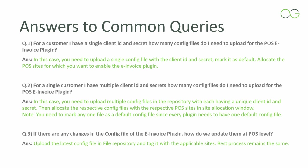Query 2: For a single customer, I have multiple client IDs and secrets — how many config files do I need to upload for the e-invoice plugin? In this case, you need to upload multiple config files in the repository, each having a unique client ID and secret. Then allocate the respective config files to the respective POS sites in the Site Allocation window. Please note, you need to mark any one file as the default config file, since every plugin must have one default config file.